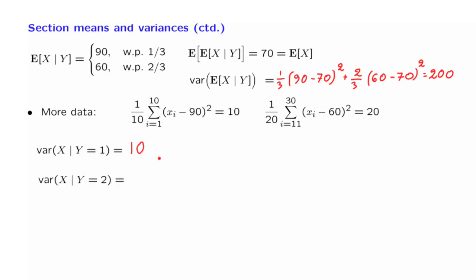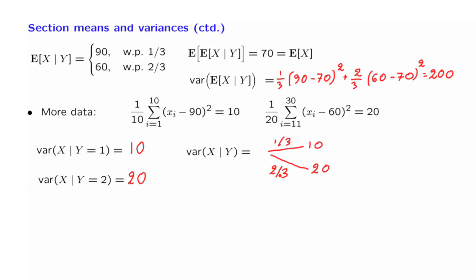For the second section, the story is similar. We are given this information, and this tells us the variance of the students' scores within the second section. So now we can describe the abstract conditional variance. It is a random variable that takes the within-section-1 variance value with probability 1 third, or it takes a value of 20 — the variance in the second section — with probability 2 thirds. With this information at hand, we can calculate the expected value of this random variable, which is 1 third times 10 plus 2 thirds times 20, which is 50 over 3.